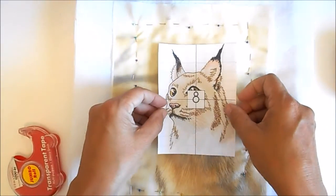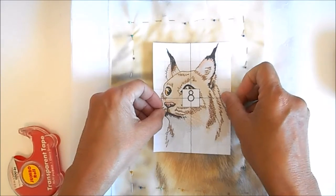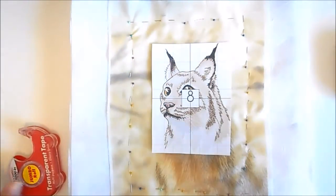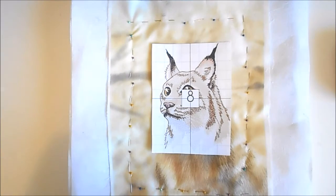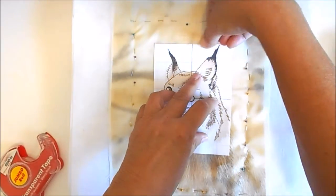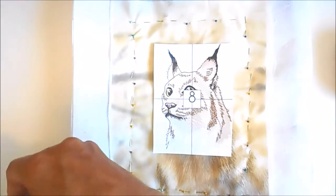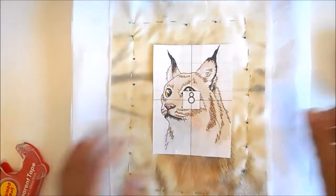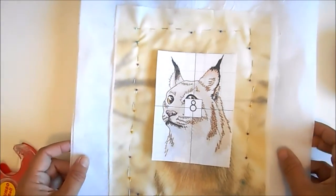And you can place it on the fabric exactly where you want the design to sew out. And I'll just tape it on. Just kind of tape it on the top and the bottom. And now I'm ready to hoop the fabric.